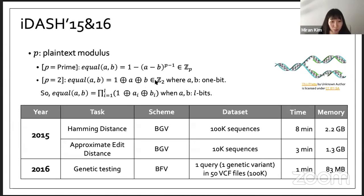If P is two, it's a very special case of the first example and it can be written more simply. There's no multiplication if you just check the equality between one bit. If you want to check the equality of multiple bits, then we compare each bit. We check the equality on each bit and multiply the results together. The performance was that it takes around eight minutes to compute Hamming distance on 100k sequence, and it takes three minutes to compute approximate edit distance of 10k sequence.